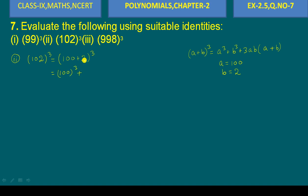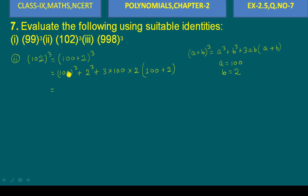Expanding: first term is a cube, that is 100³. Plus b cube, that is 2³. Plus 3ab, which is 3 into 100 into 2, into (a + b), that is (100 + 2).